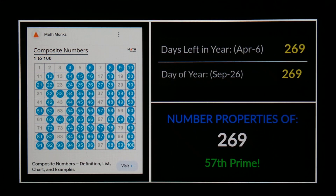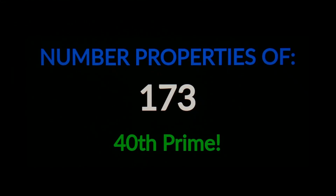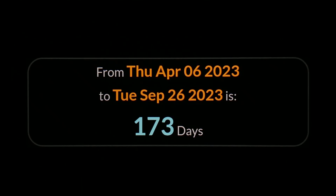If you count from the lowest composite up to the number 57, you find out it's the 40th composite number. The 40th prime number is 173, and there's a 173-day count connecting those two dates that I talked about.